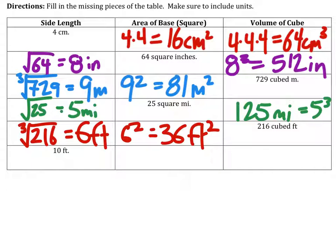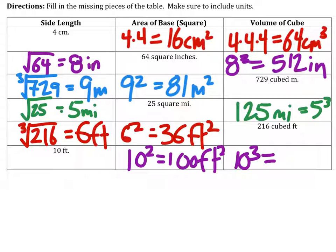So if the side length is 10, then the area would be 10 squared, which is 100 feet squared. And this next one is 10 cubed, the volume. So that would be 1,000 feet cubed.